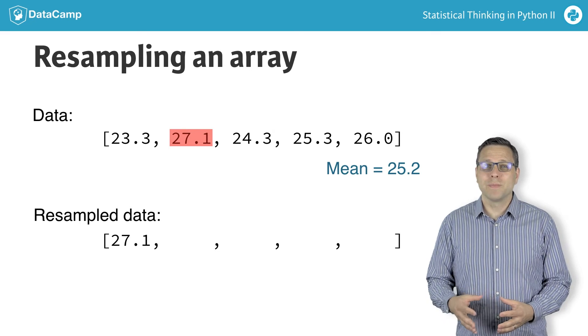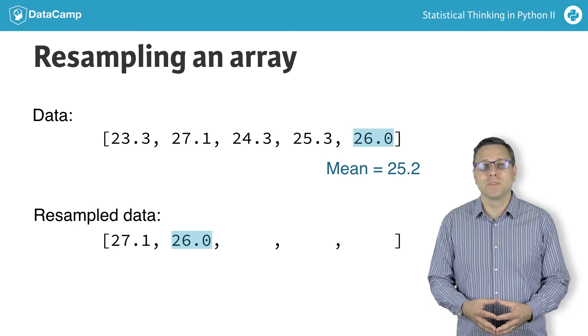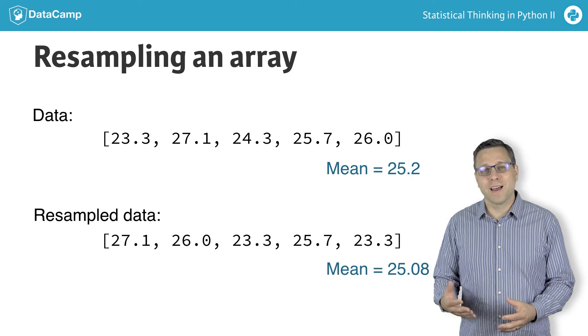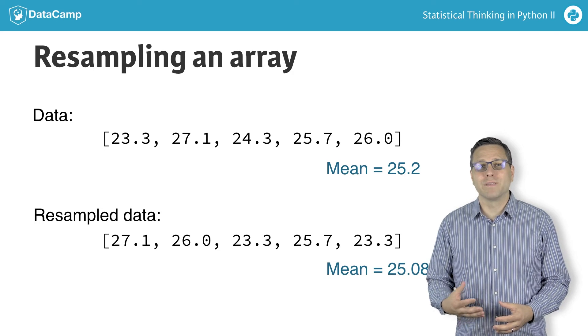Then, we randomly select another one and store it. We do this n times, where n is the total number of measurements, 5 in this case. We then have a resampled array of data.